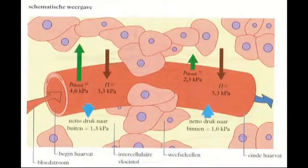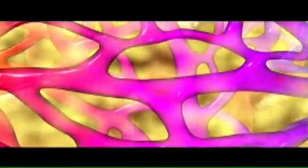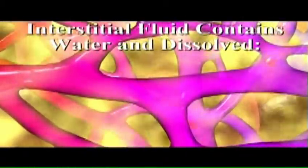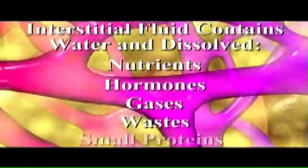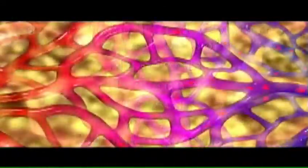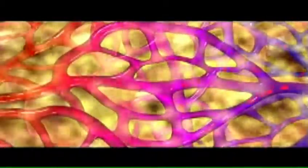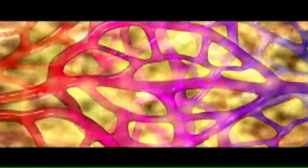Pressure within capillaries causes a continuous leakage of fluid from the blood plasma into the spaces surrounding the capillaries and adjacent tissues. This fluid, known as interstitial fluid, consists primarily of water in which nutrients, hormones, gases, wastes, and small proteins from the blood are dissolved. The exchange of materials between capillary blood and nearby cells occurs through this interstitial fluid, which bathes nearly all the cells of the body.